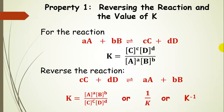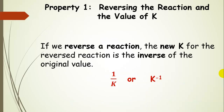Looking at our generalized reaction again, we have the equilibrium constant expression from the previous slide. Now, if we reverse the reaction — making products into reactants and reactants into products — then the equilibrium constant expression is inverted. The value for the equilibrium constant becomes 1 over K, or K to the negative 1 power; they're equivalent. So if we reverse a reaction, the new equilibrium constant is the inverse of the original value.